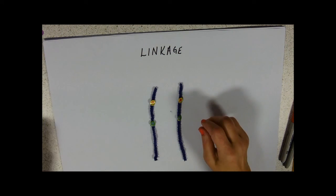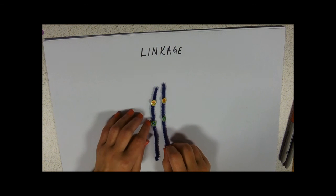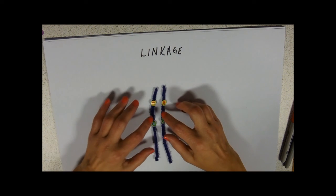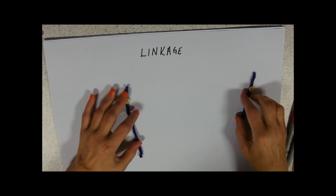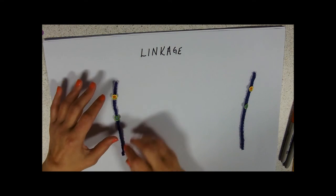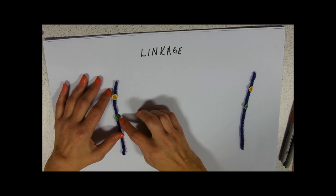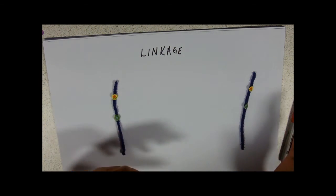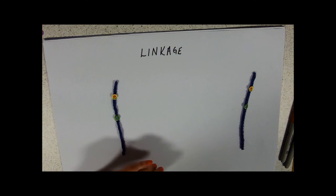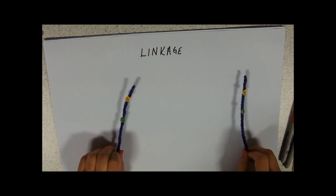Obviously these can't then assort independently, because remember, meiosis splits the homologues apart into two separate cells. So this allele is always going to travel with this allele, this allele is always going to travel with this allele into the gamete, and that's going to affect the ratio that you get at the end.